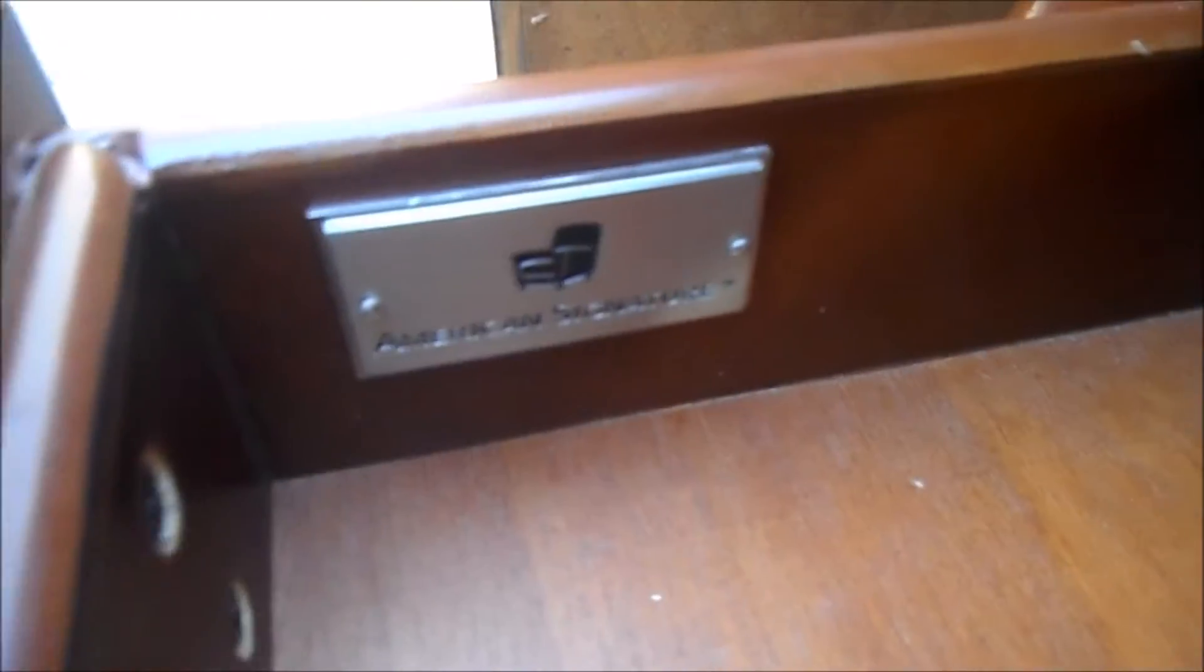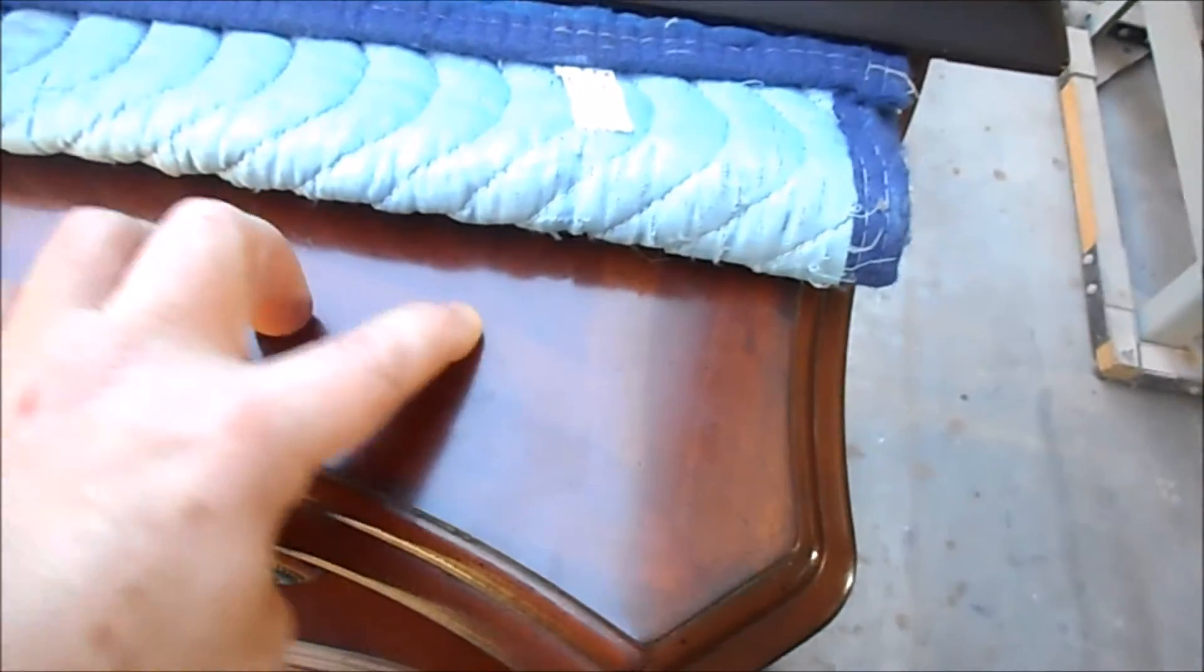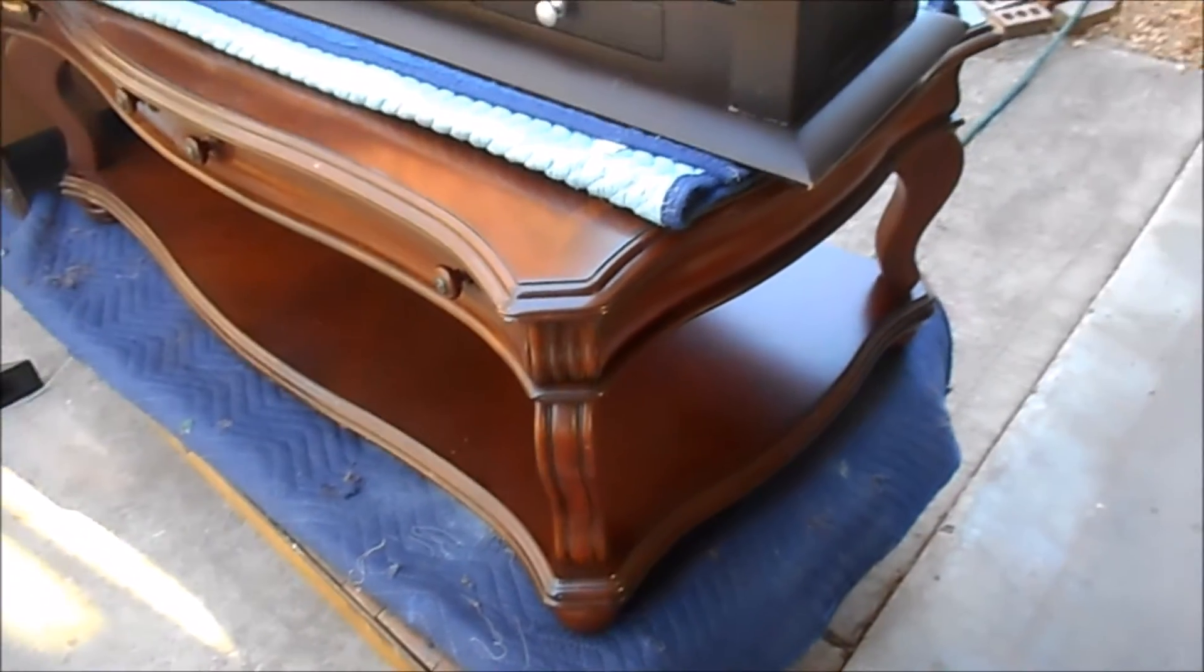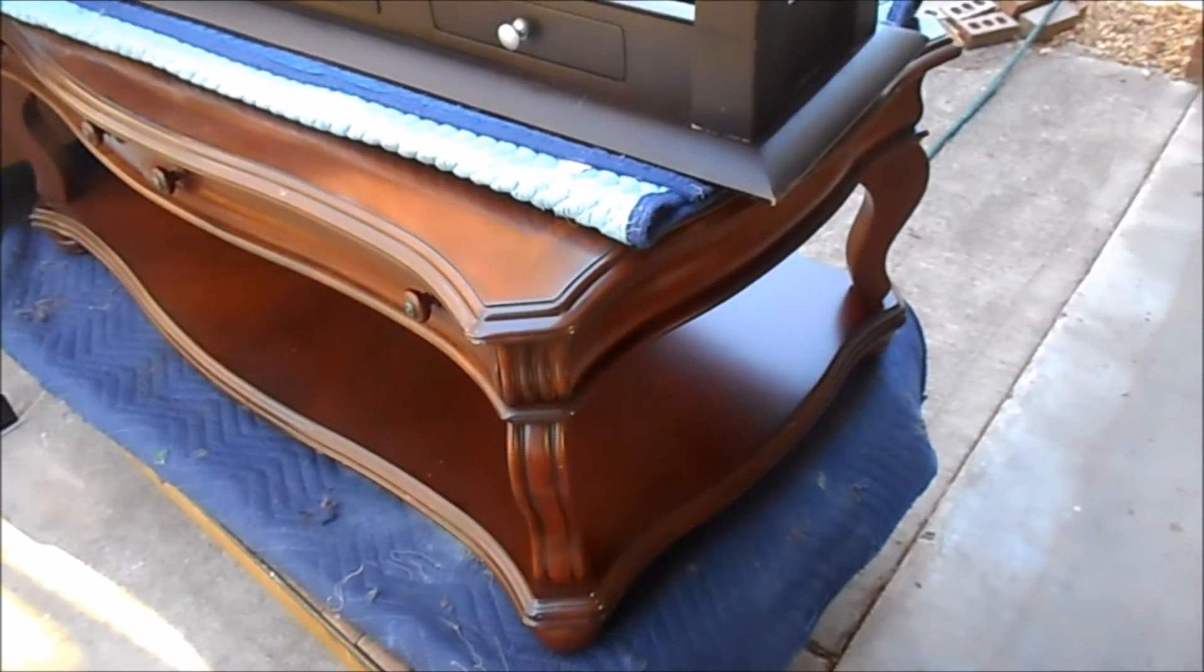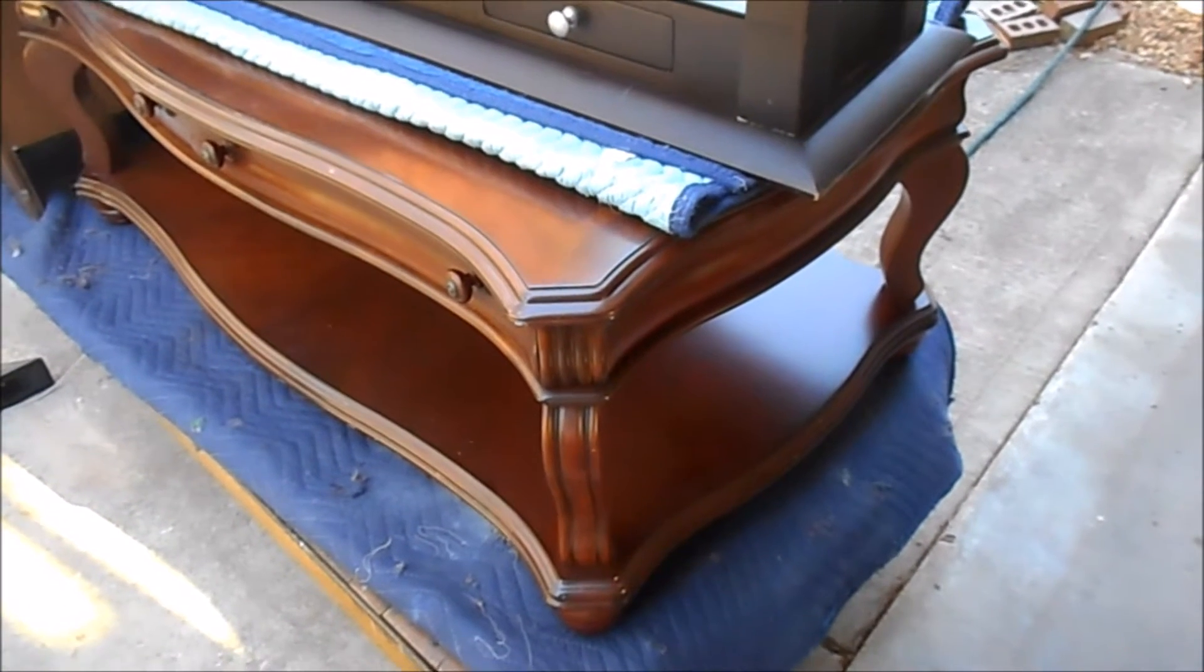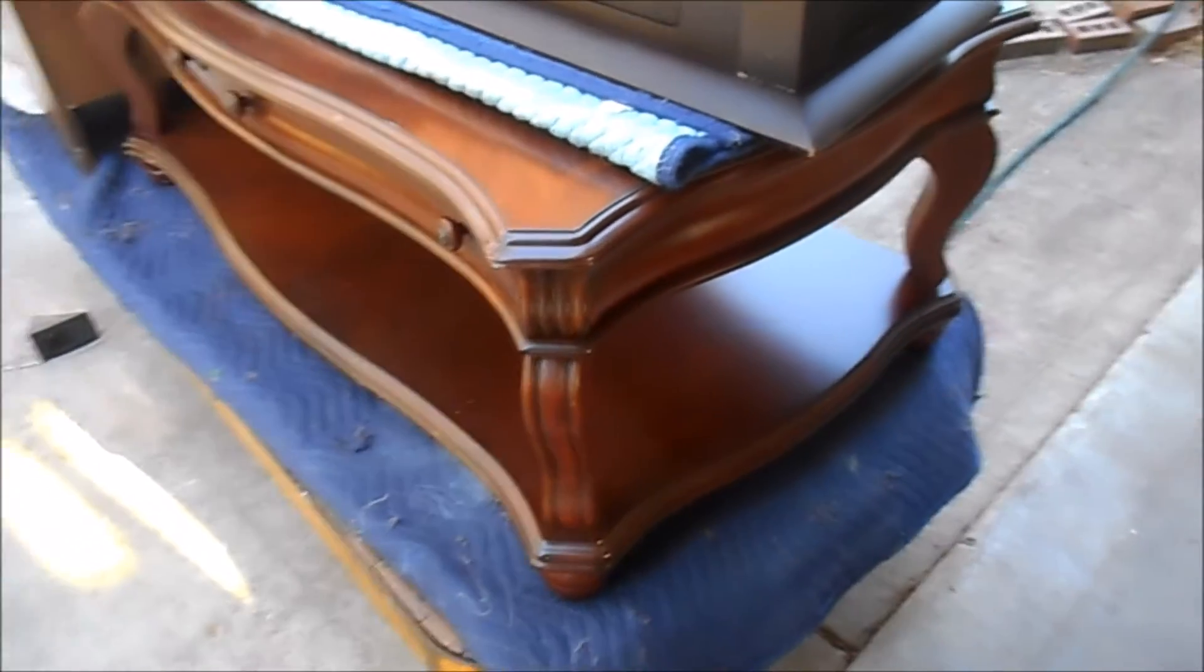The next one is this gigantic coffee table. This is American Signature Furniture. Sorry, American Signature Furniture, but it's a piece of junk. It's particle board with this make-believe fancy laminate on it. If the top turns out to be lacquer, what I'll do is wet sand it, glaze it, and shoot a coat of lacquer on it. If the top is not lacquer, I think I'm just going to polish it up because the top is fairly scratched and dirty.